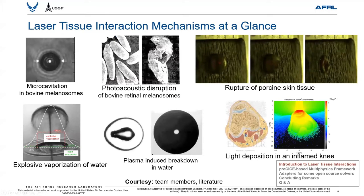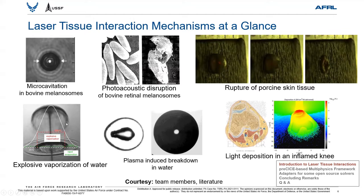Here are some original photographs from experiments showing various laser tissue interaction mechanisms in action. On the top left, we have microcavitation in melanosomes, dealing with vapor bubble formation and expansion. Melanosomes are pigmented granules found in the retinal pigment epithelial RPE cells in the eye and in keratinocytes of pigmented skin. The second picture shows photoacoustic disruption in bovine retinal melanosomes, where damage occurs due to stress waves and wave reflections at material interfaces. The top right picture corresponds to rupture of skin tissue due to rapid vaporization of water. In the interest of time, we'll go through the explosive vaporization mechanism in some detail in the next slide.